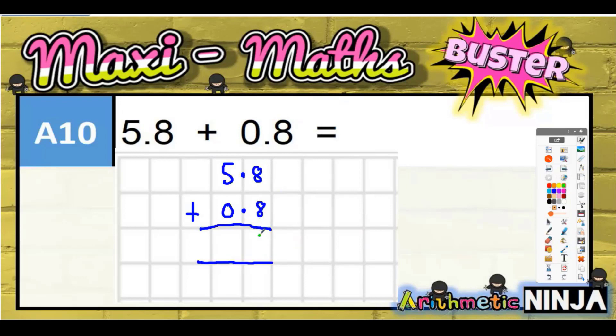8 plus 8 is 16, put the 6 in, carry the 1. 5 plus nothing is 5, plus the 1 you just carried is 6.